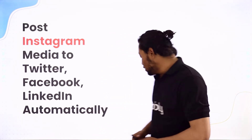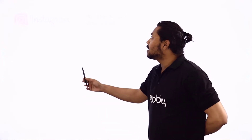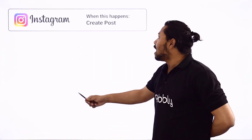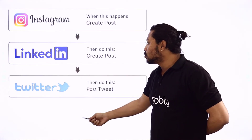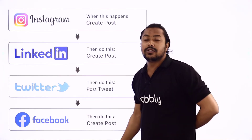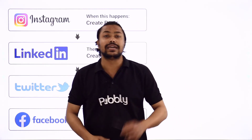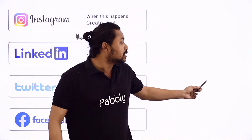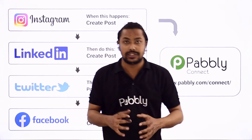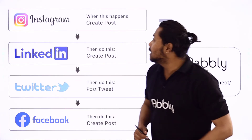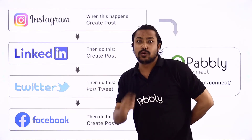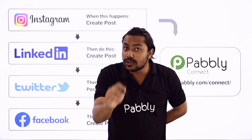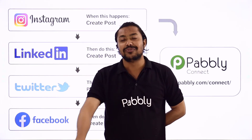This automation can do wonders for you. So what are we going to do here? First, I am going to create an Instagram post. After that, that post will be shared to LinkedIn, Twitter and Facebook simultaneously and automatically. We are going to use an integration and automation service, Pabbly Connect, which will help us connect Instagram, LinkedIn, Twitter and Facebook together. If you want to learn this automation, you have to come with me to the screen.